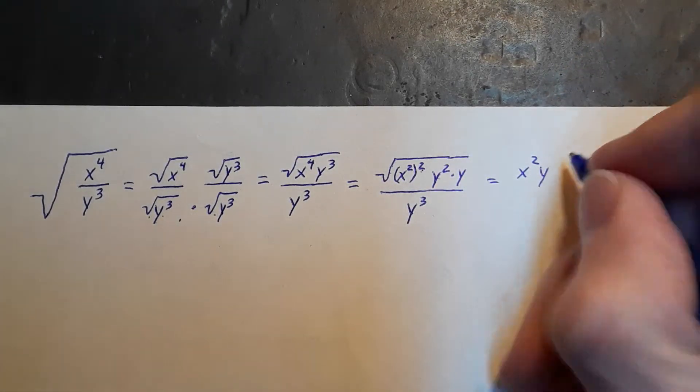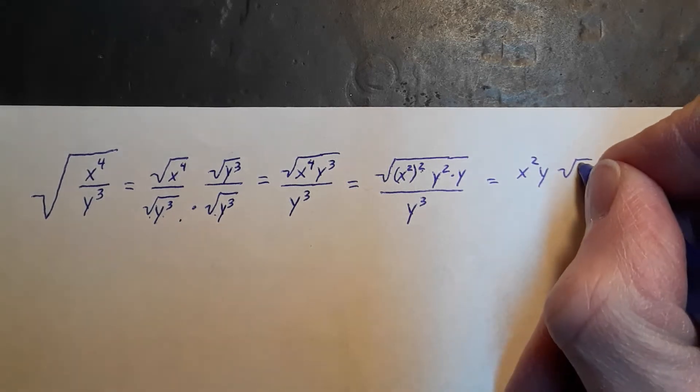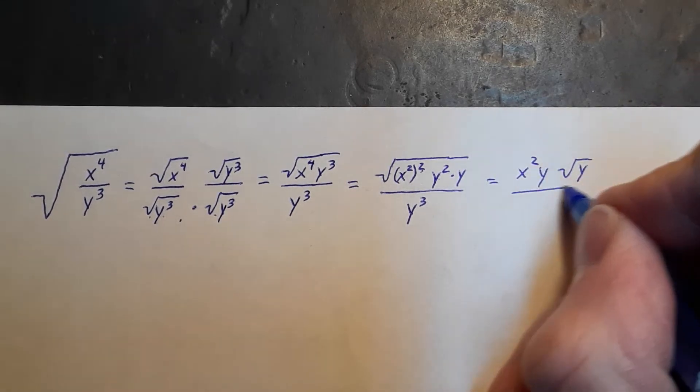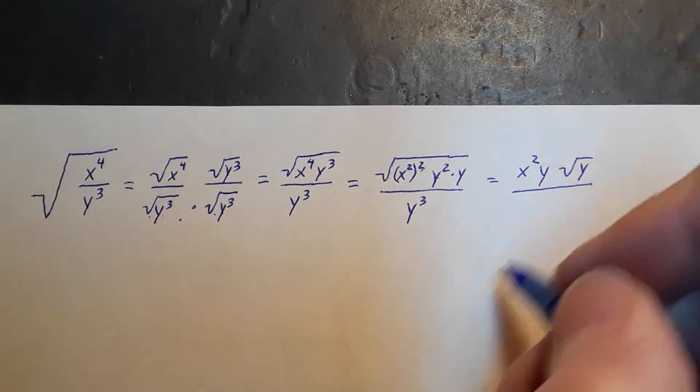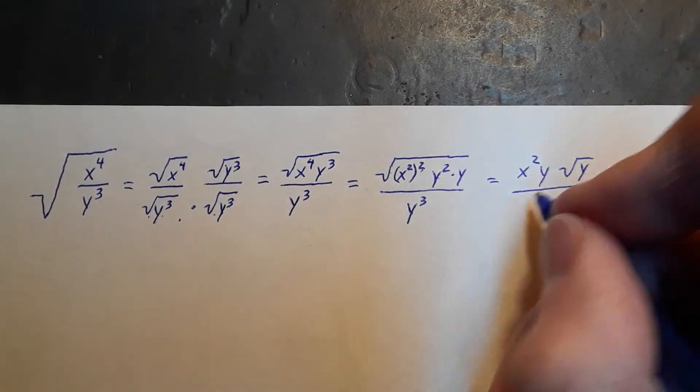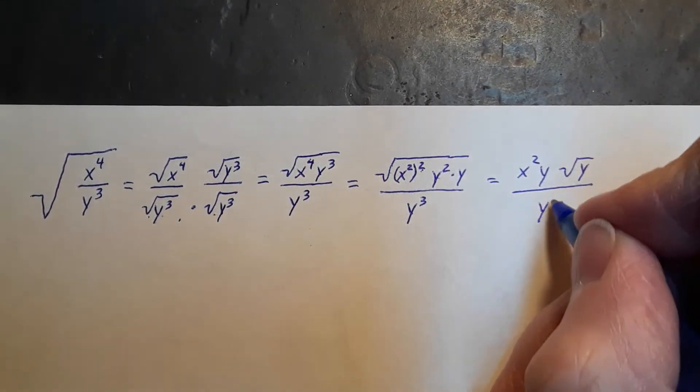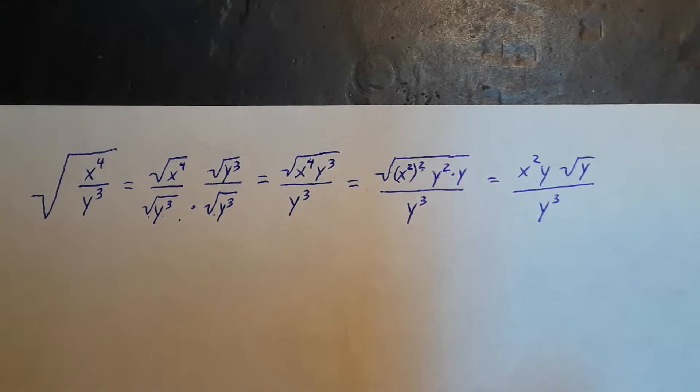And since this is y to the first power, it's going to have to stay inside because it doesn't have a square to have the square root act on. And I have y cubed in the denominator.